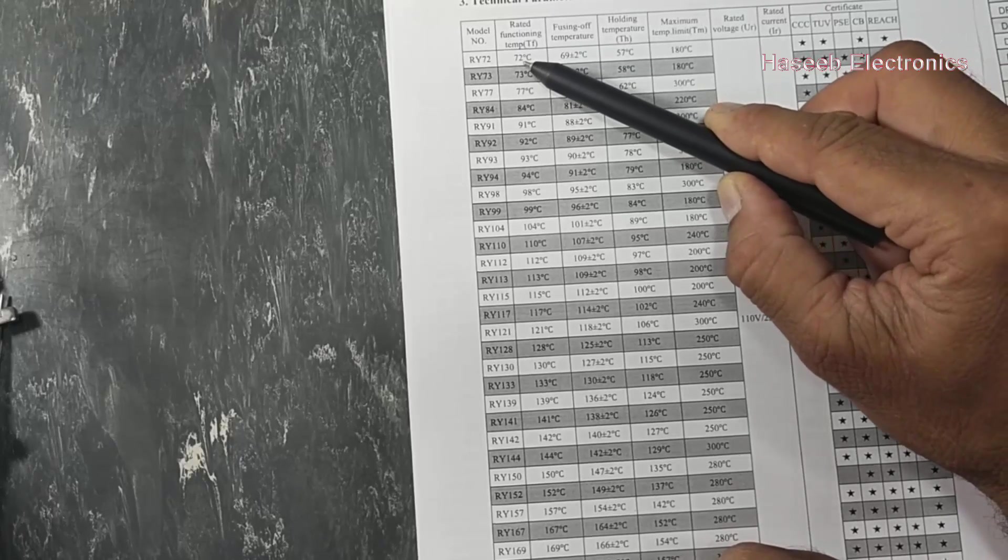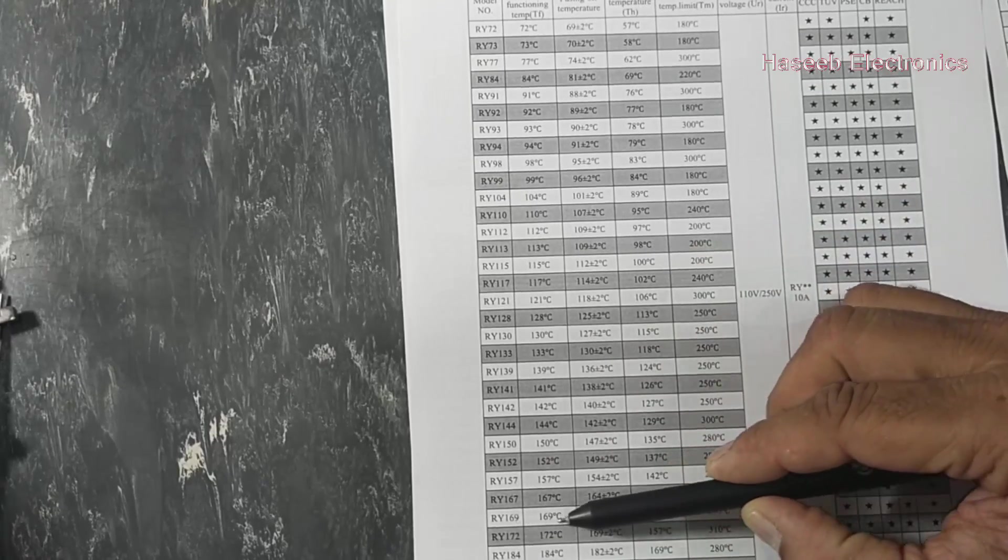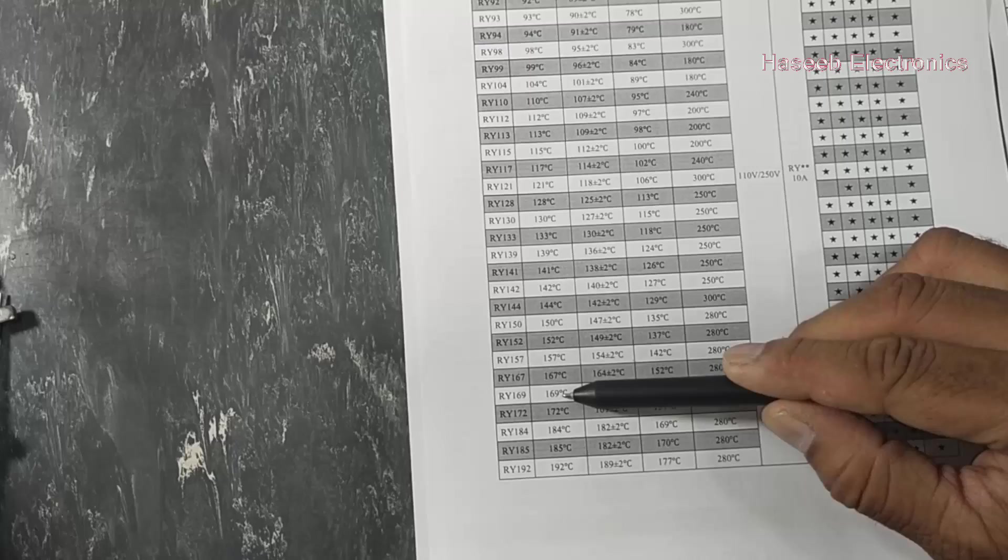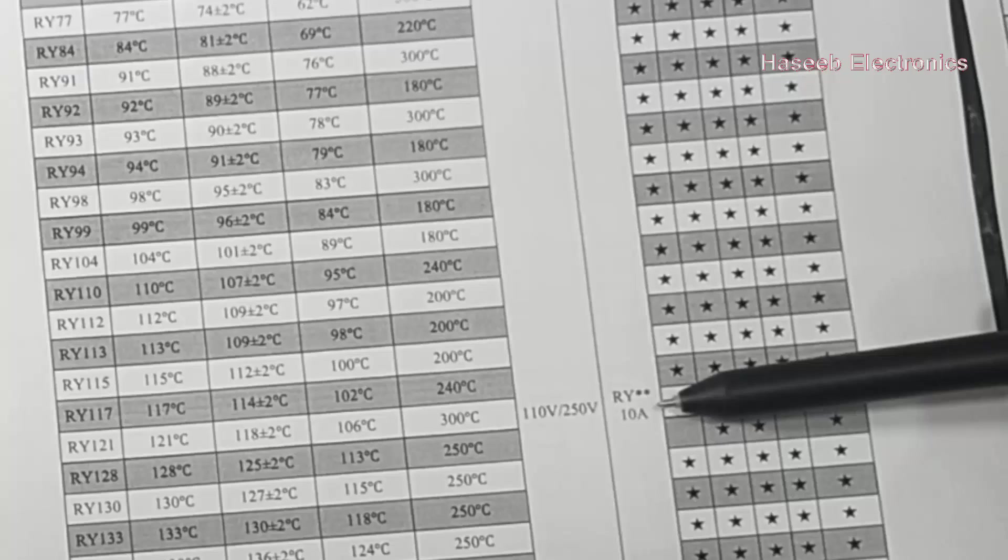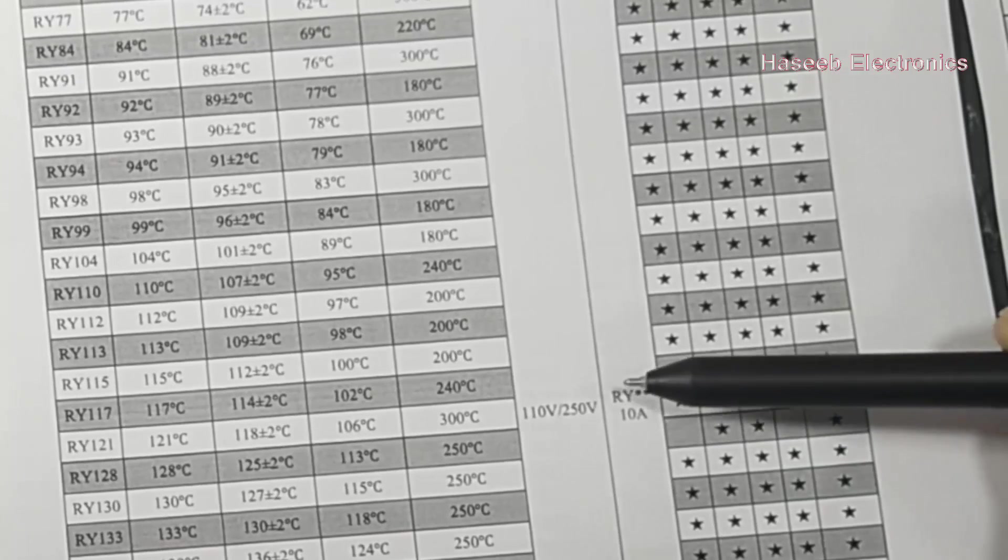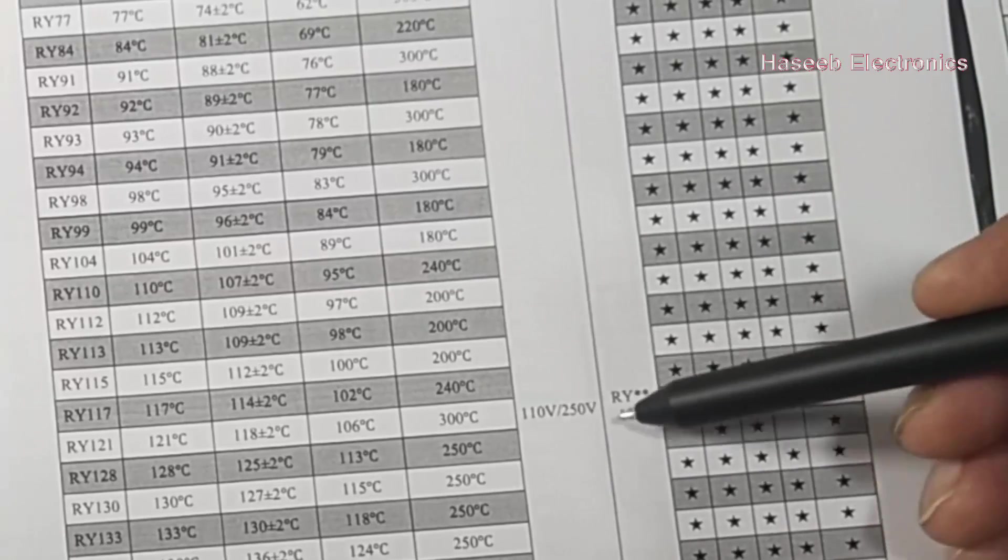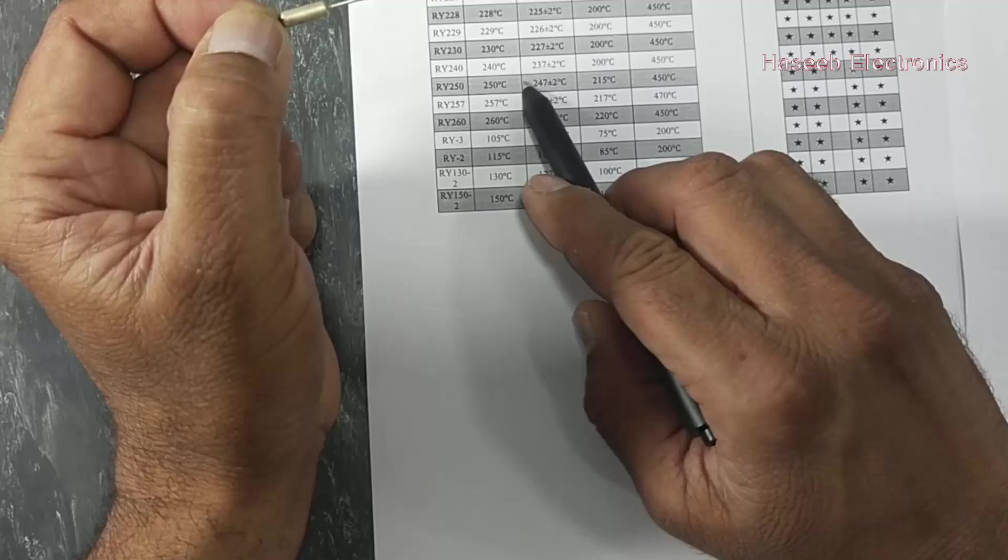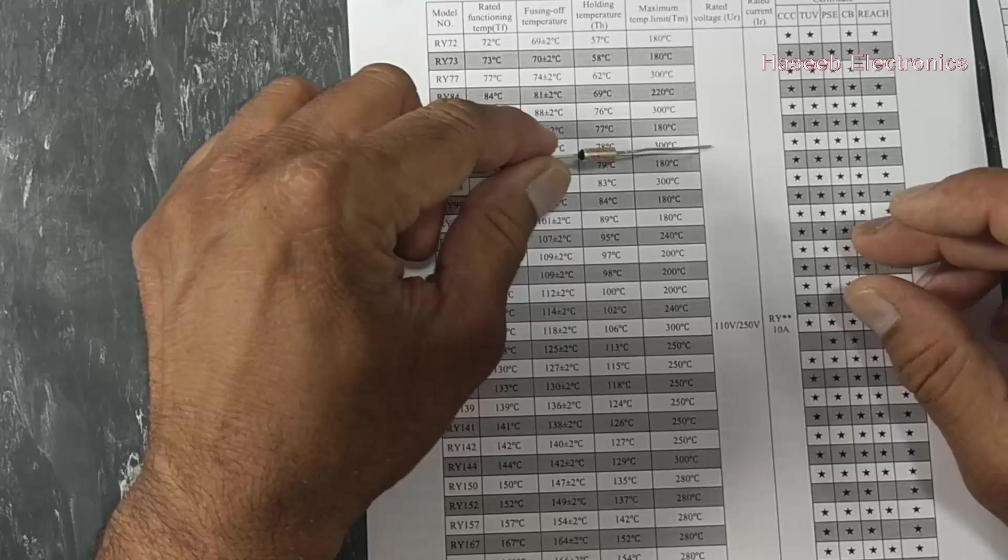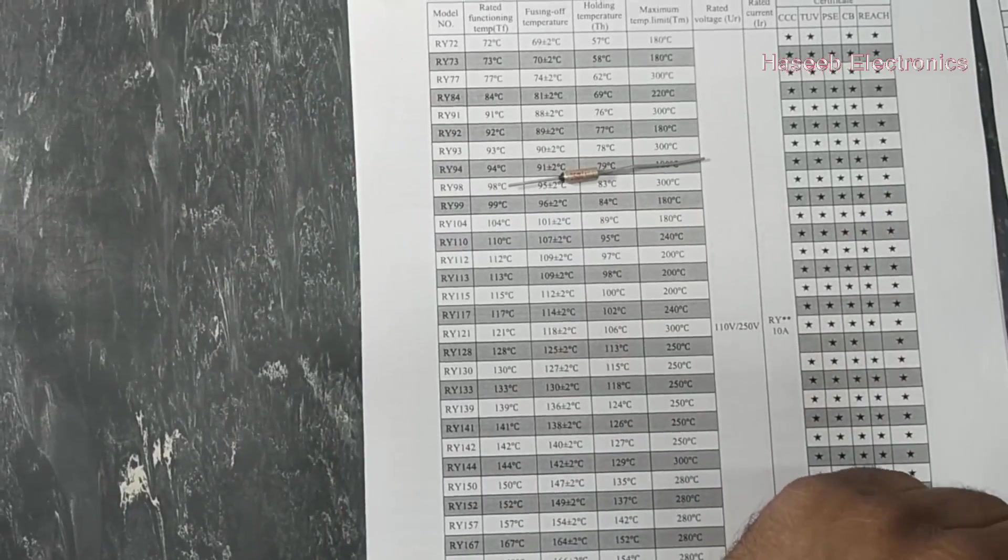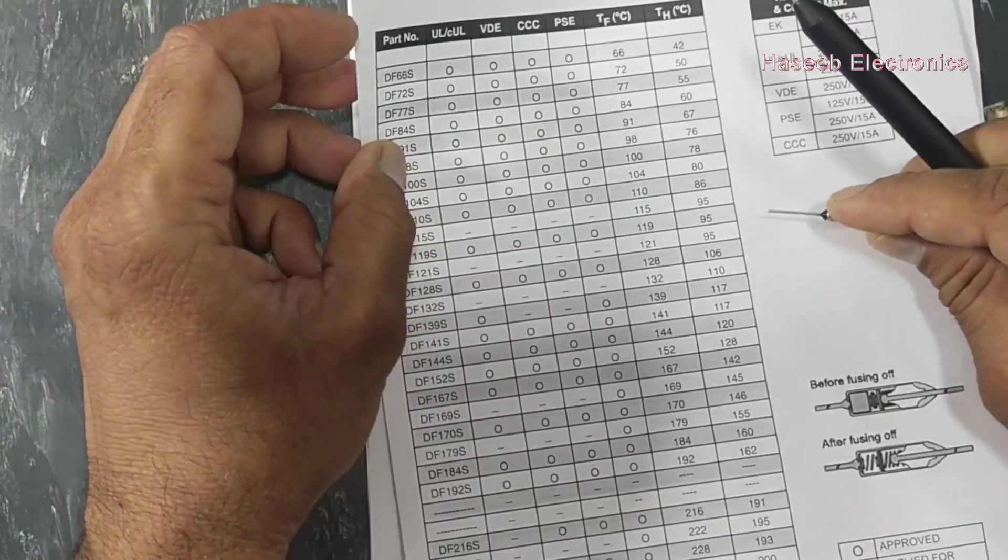In RY category we have RY 72, RY 139 - if it is RY 72 that means it will work at 72 degree rated functioning temperature. RY 15, RY 169 - so RY 169 will operate at 169. These have different temperature ratings. Here is current rating: RY 10 ampere, 250 volt, 10 ampere. RY 250 will operate at 250 degree centigrade. RY 260 will operate at 260 degree centigrade.